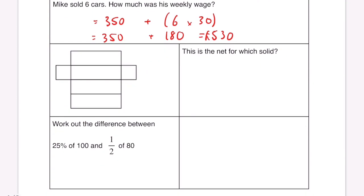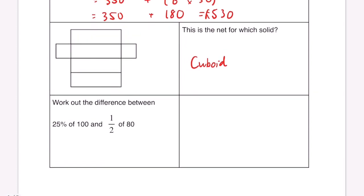This is the net for which solid. If you imagine that was like a cardboard box and you rolled it all up that would be a cuboid. Work out the difference between 25% of 100 and half of 80. So 25% of 100 is just 25. Half of 80 if we divide it by 2 we get 40. So 40 take away 25 is going to be 15 and that is the end of the numeracy one.